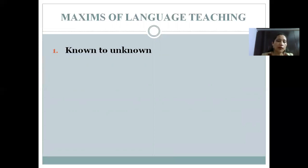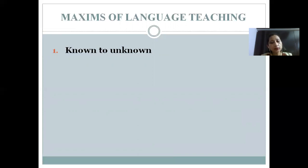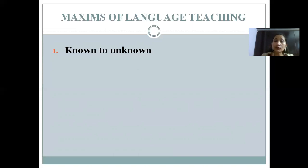The very first maxim of language teaching is known to unknown. As this maxim itself suggests, go from something which is known and gradually move to something which is not known. This maxim talks about making use of the learner's prior knowledge or background knowledge — it could be background knowledge of language, of content, or of the real world the child is part of — to develop new language and maximize language learning. When developing language with English learners, you must start where students are, finding out what they already know about a new topic.